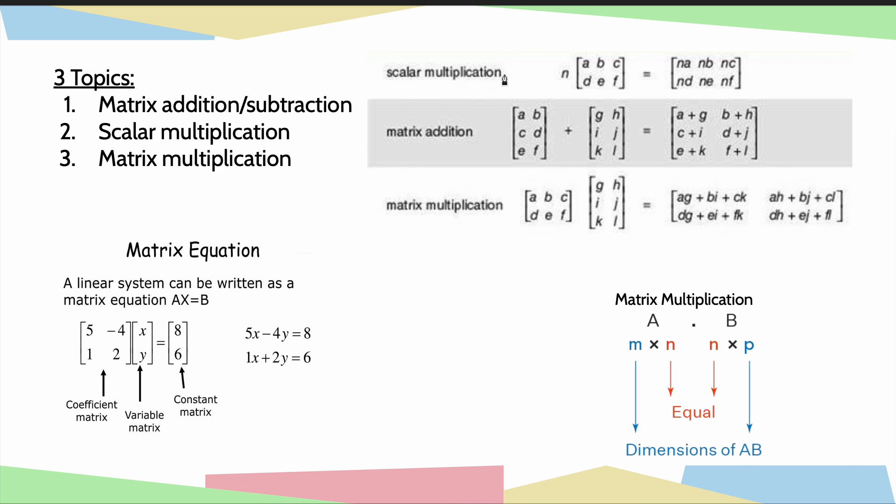Second topic is scalar multiplication. Scalar, in this case, just means a constant. So you'll see here, N would be our scalar, and that's just going to be any number. So it could be 3, 5, whatever. And then here is your matrix. And then you'll see to perform scalar multiplication, all you do is you take your constant and you multiply it by each one of these terms. And so you'll see in our resultant matrix over here, we have N times A in our first position, N times B in our second, N times C, and so on. That is the second topic. And sometimes questions will actually combine these. So you may have to actually multiply by a scalar and then add to matrices, for example. We'll get into some practice problems like that a bit later.